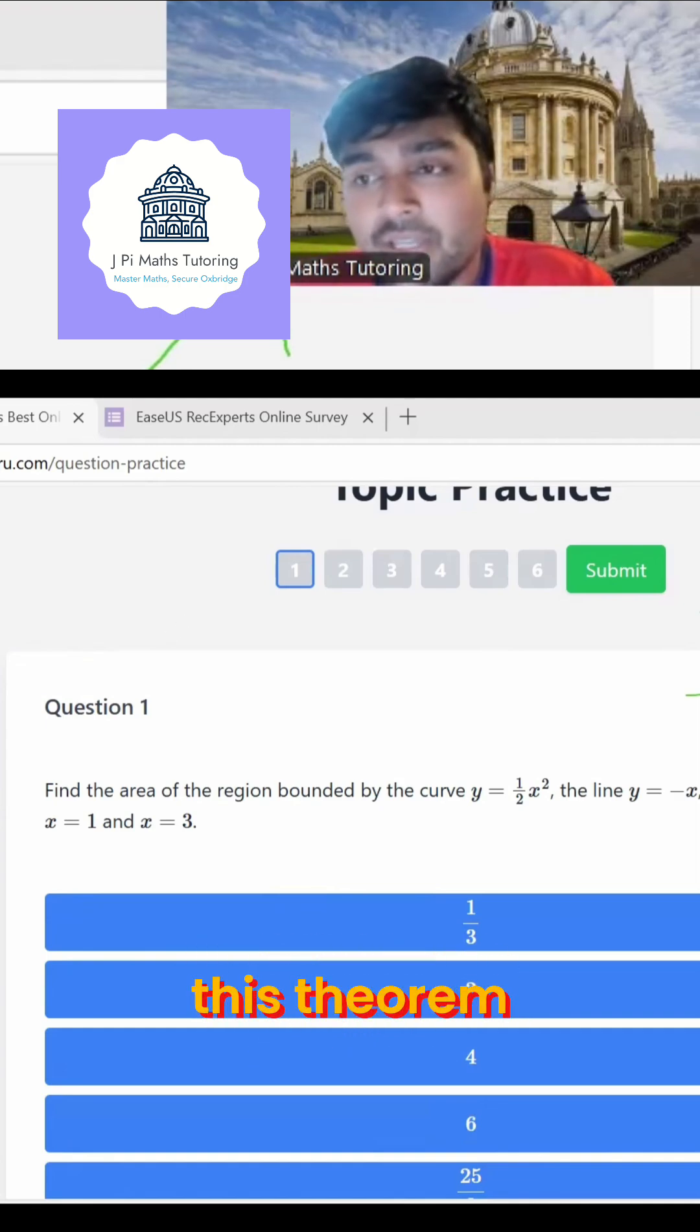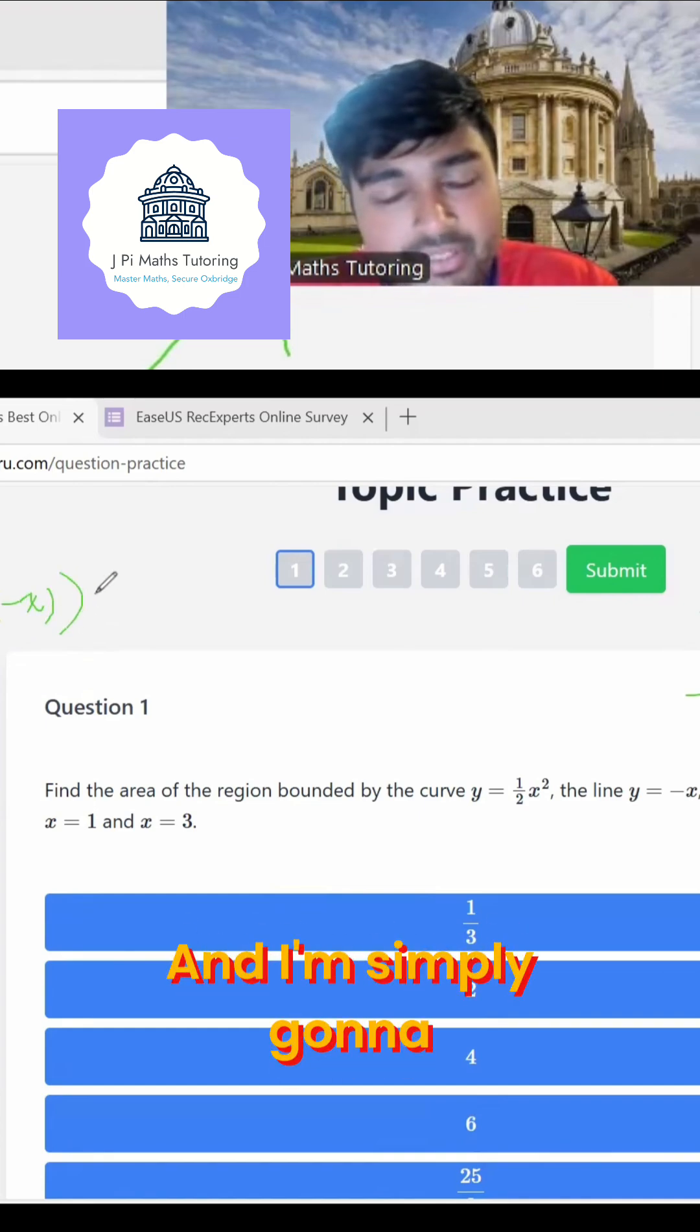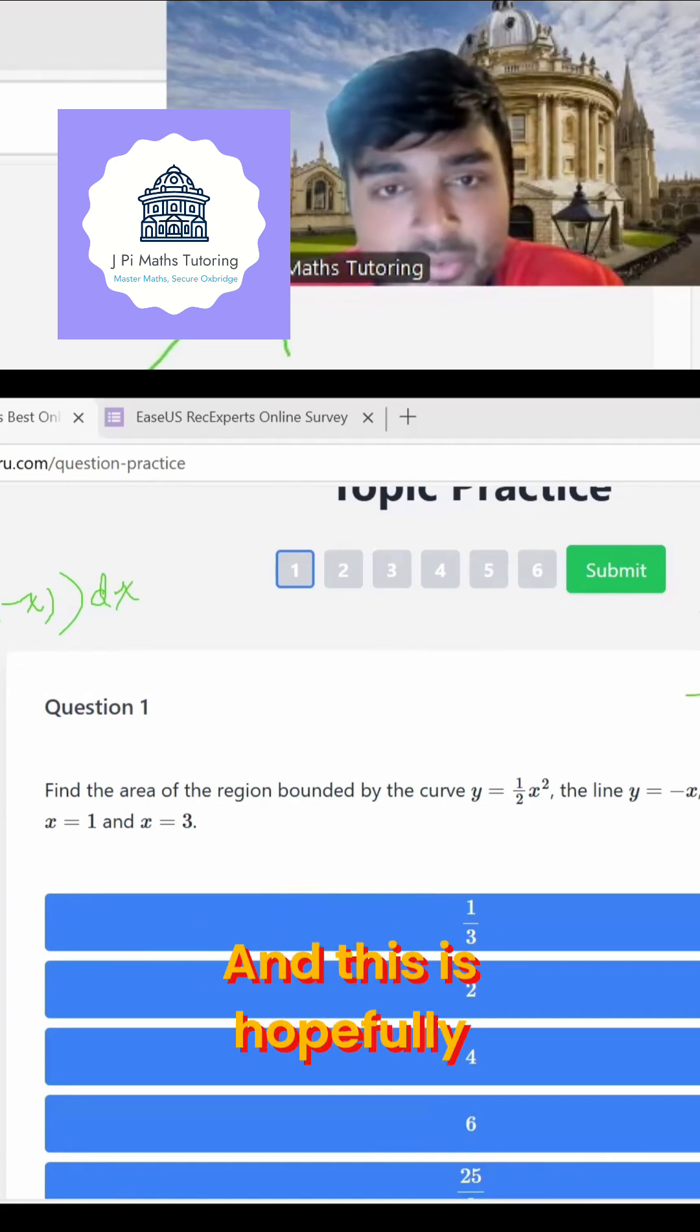You can kind of ignore where the axes are if you use this theorem. So the top curve here is the half x squared, and the bottom curve is the minus x curve. And I'm simply going to find this integral and evaluate this. And this hopefully should be pretty straightforward.